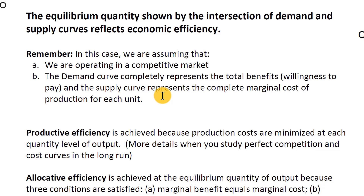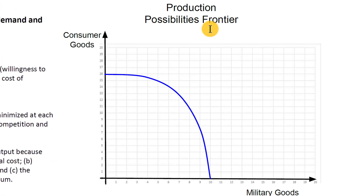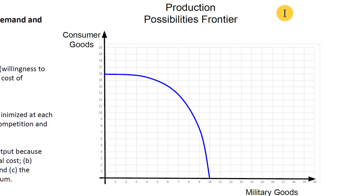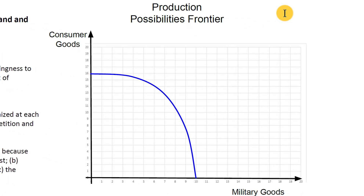If those assumptions hold, the equilibrium quantity is efficient. There are two kinds of efficiency. Looking at a production possibilities frontier — sometimes called a production possibilities curve — we boil all goods and services into two categories, say consumer goods versus military goods. The blue line represents the highest possible combinations that an economy could produce when all resources are fully used and people are working where they have the best comparative advantage.